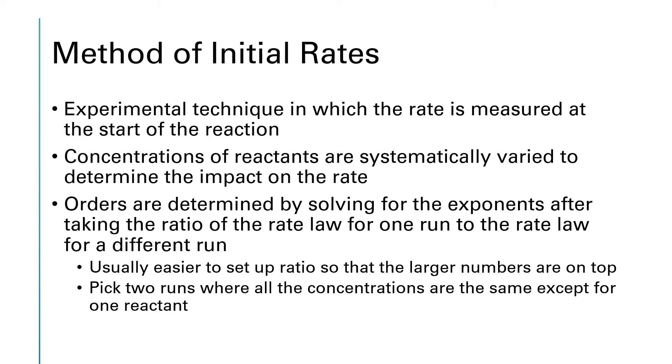The rest of this video is going to be looking at something called the method of initial rates. It's an experimental technique where you do a series of experiments on the exact same reaction, but you deliberately change the concentration of one of the reactants. And we're going to determine the orders for each of the individual reactants by writing out the rate law for an experiment and writing out the rate law for a different run of the experiment.